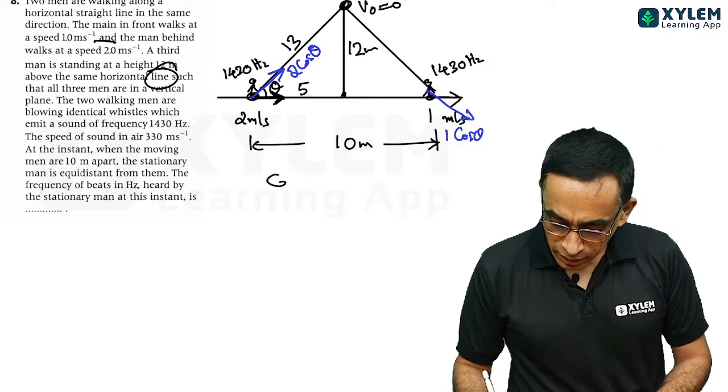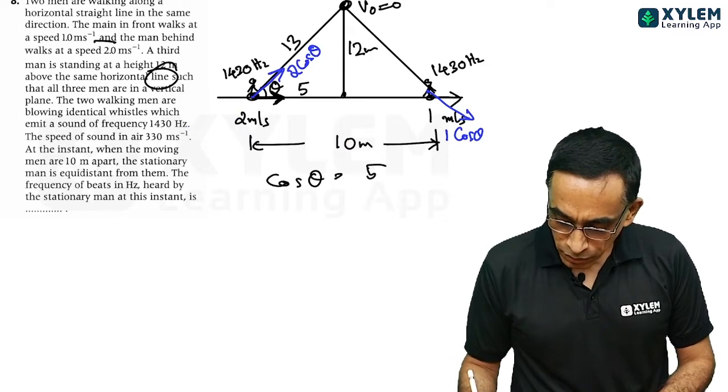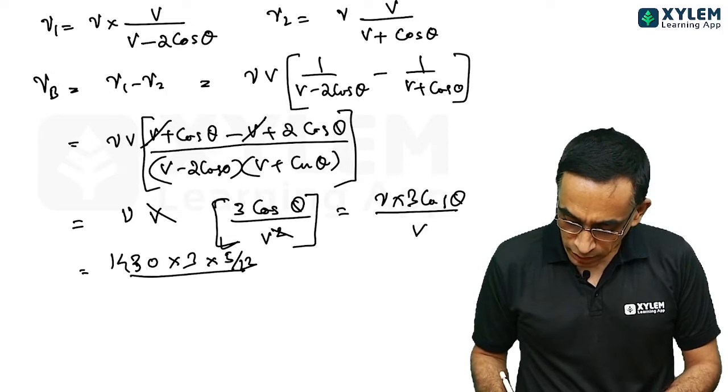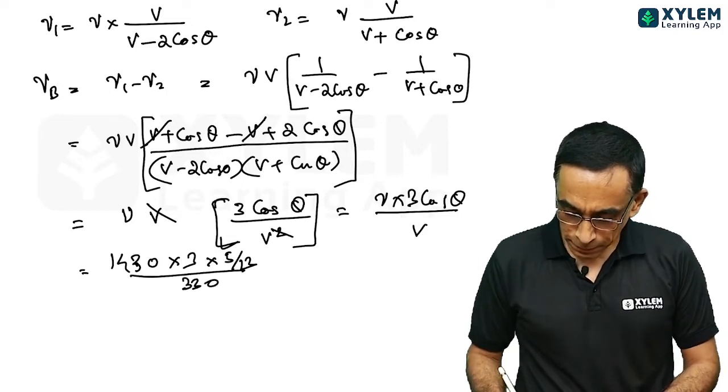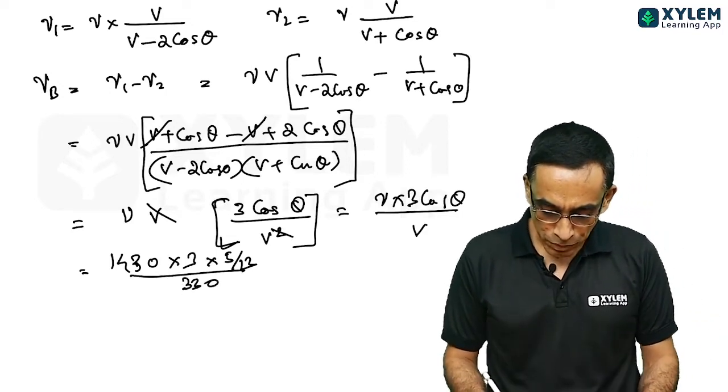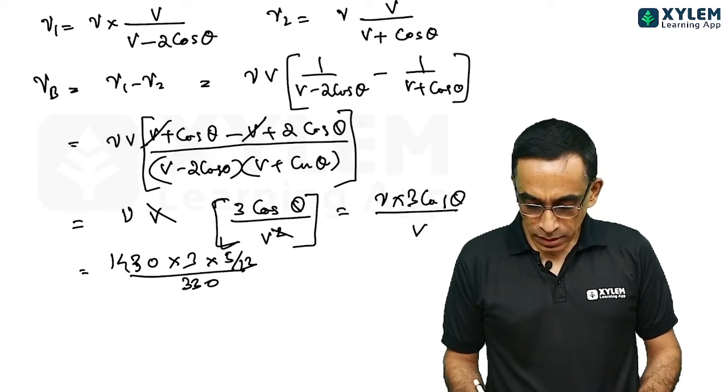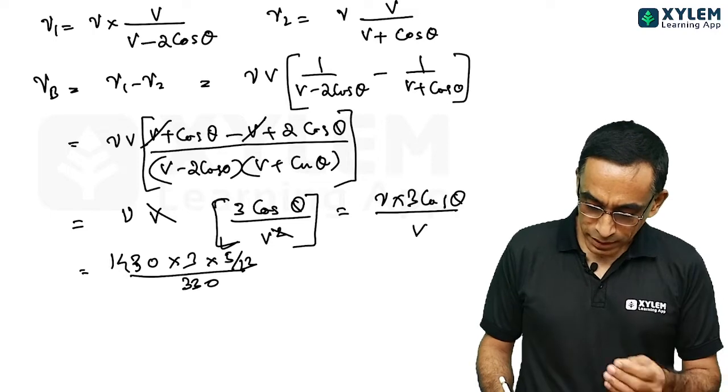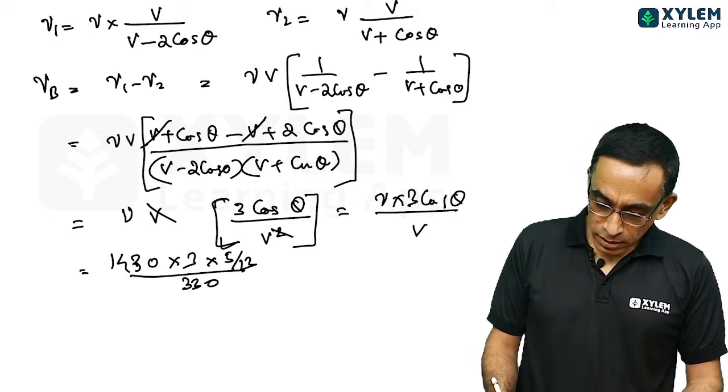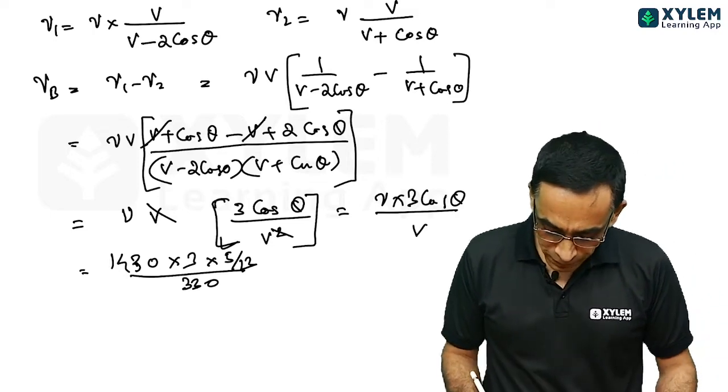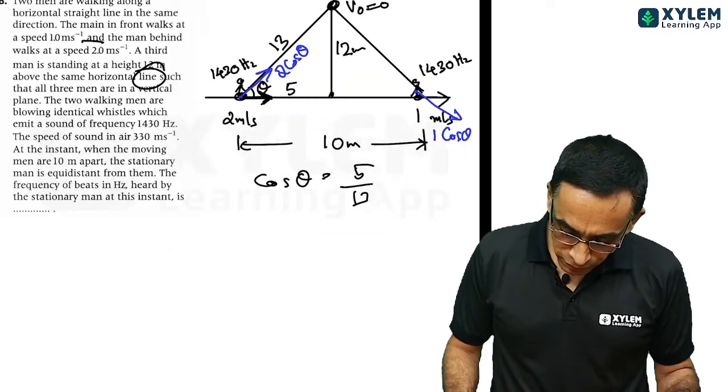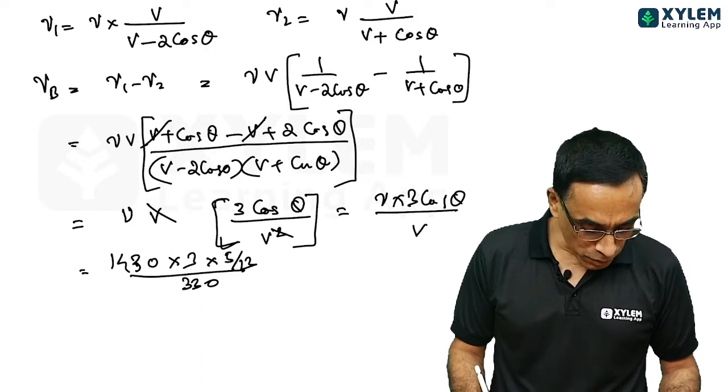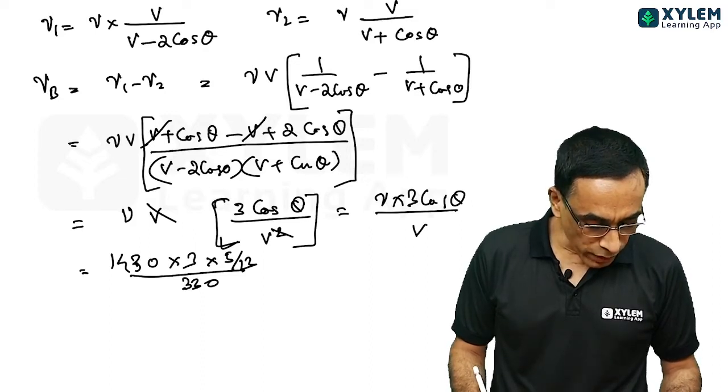And substitute values nu is 1430 into 3 into. What is cos theta from the diagram? Cos theta is nothing but 5 by 13. This is 3 into 5 by 13 divided by v is 330. And 330, 1430 goes approximately 3 times 9, 945 by 13. This is what we have to get finally approximation.